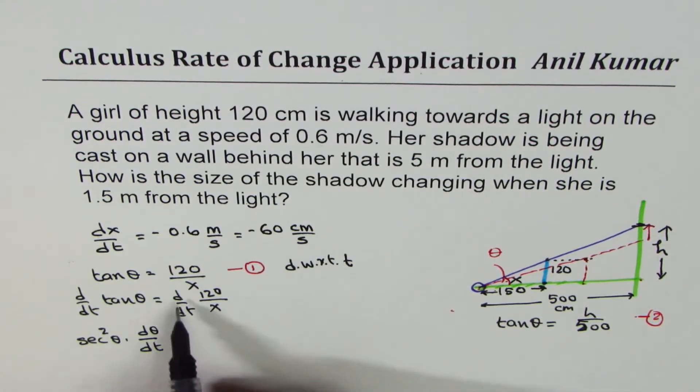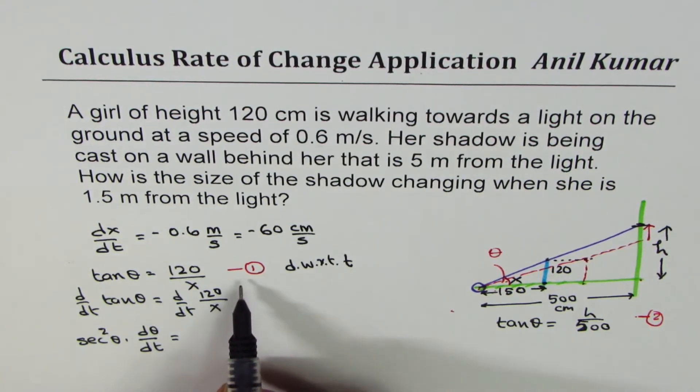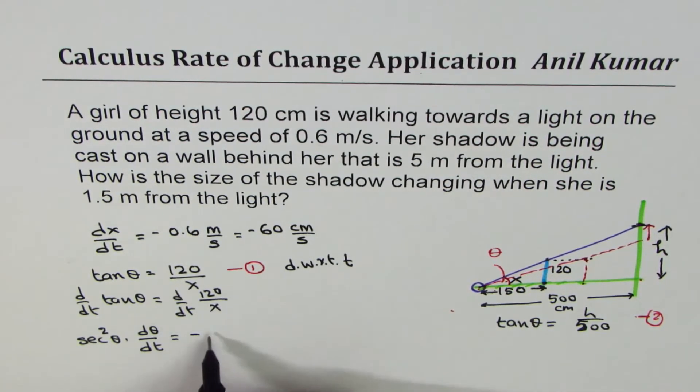Equals to derivative of 120 over x. You can treat this as x to the power of minus 1. So we get -120 x to the power of minus 2. That is x square. Now, times dx/dt. So we have differentiated with respect to time.